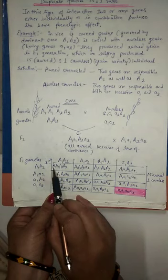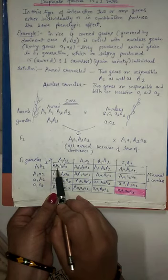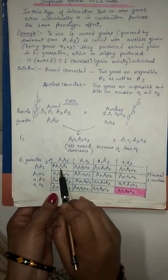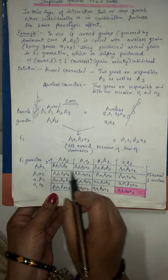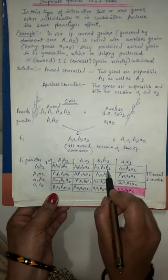in which we can observe that capital A1, A1, when present, both are present, and A2, A2, both are present, they will produce orned variety. Here also orned, here also orned.